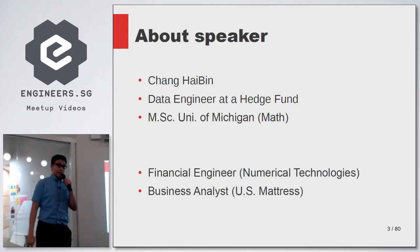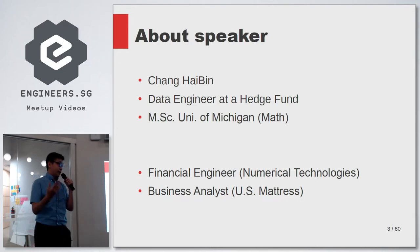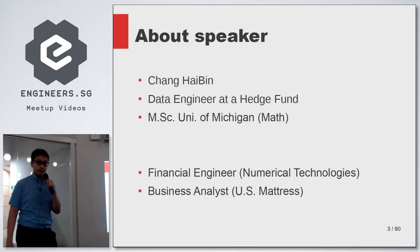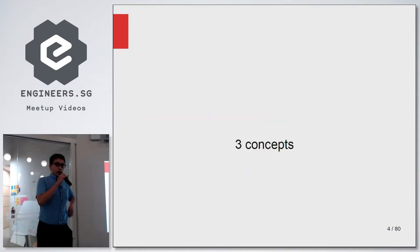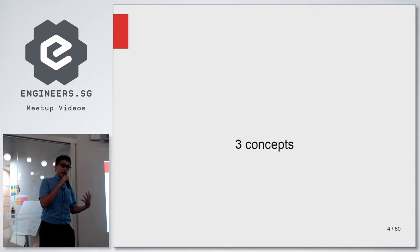My name is Hai Bin and I'm currently a data engineer. I have a master's degree in mathematics. I used to be a financial engineer and a business analyst. Today I'd like to illustrate three concepts in functional programming and show you the style of writing code in a functional, F#-inspired way.